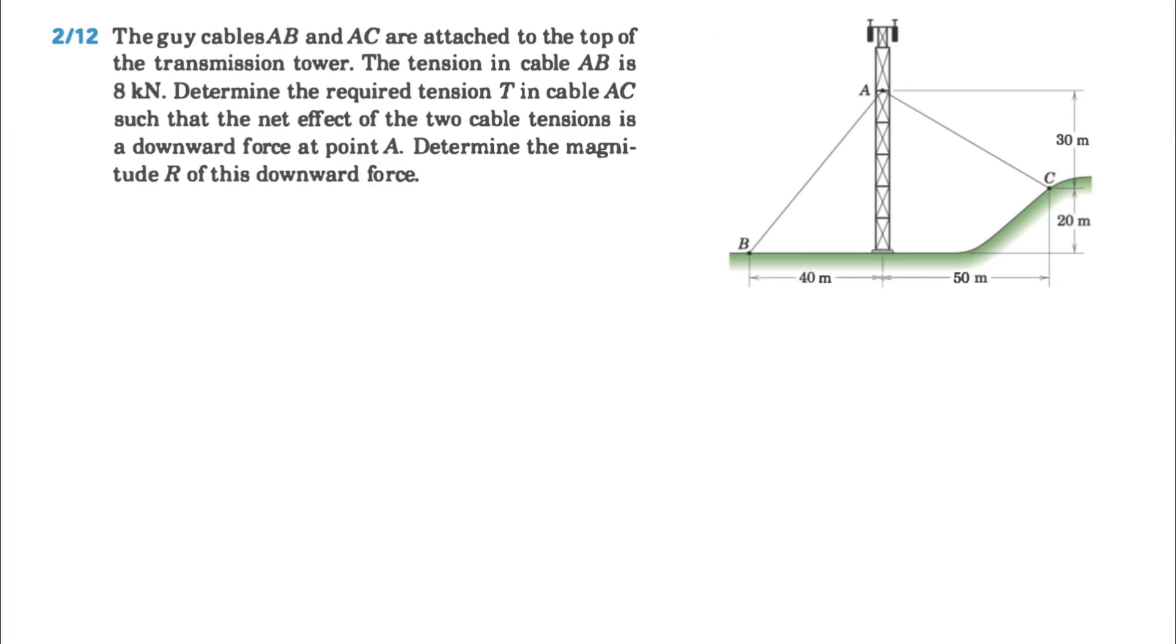Hi guys, welcome back. We're going to be solving another question from the second chapter of the Merriam textbook. We have these two cables, AB and AC, that are attached at the top of the transmission tower.